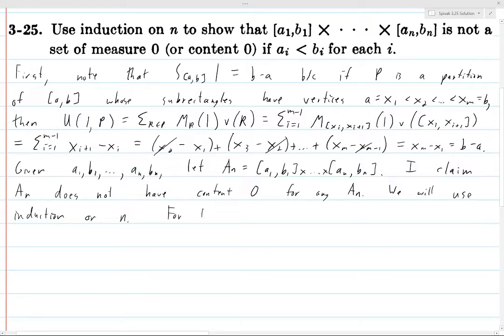Alright, for the base case, then this is pretty straightforward. Well, the integral over [a₁,b₁] of 1, well this we just proved is b₁ minus a₁, and this is greater than zero. So by exercise 3-15, [a₁,b₁] does not have content zero.